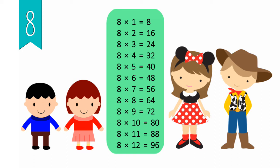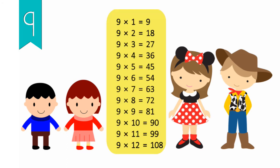9 x 1 equals 9, 9 x 2 equals 18, 9 x 3 equals 27, 9 x 4 equals 36, 9 x 5 equals 45, 9 x 6 equals 54, 9 x 7 equals 63, 9 x 8 equals 72, 9 x 9 equals 81, 9 x 10 equals 90, 9 x 11 equals 99, 9 x 12 equals 108.